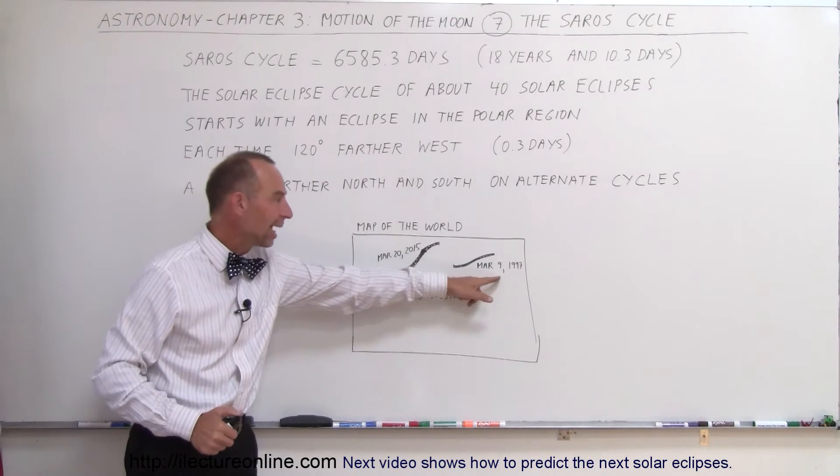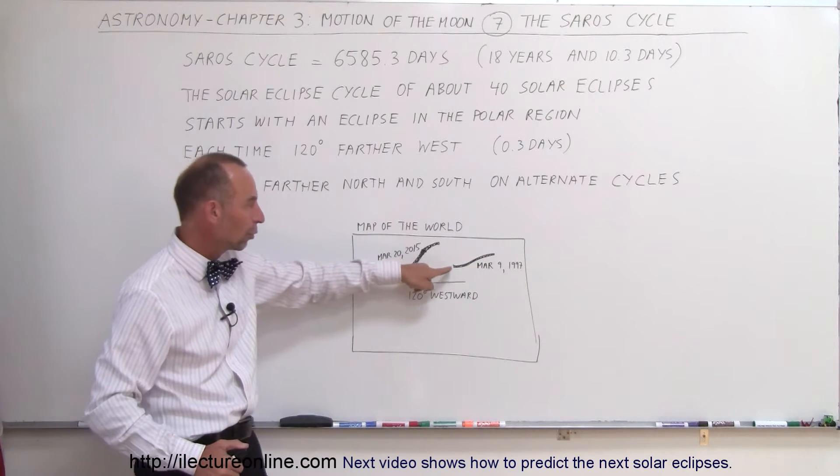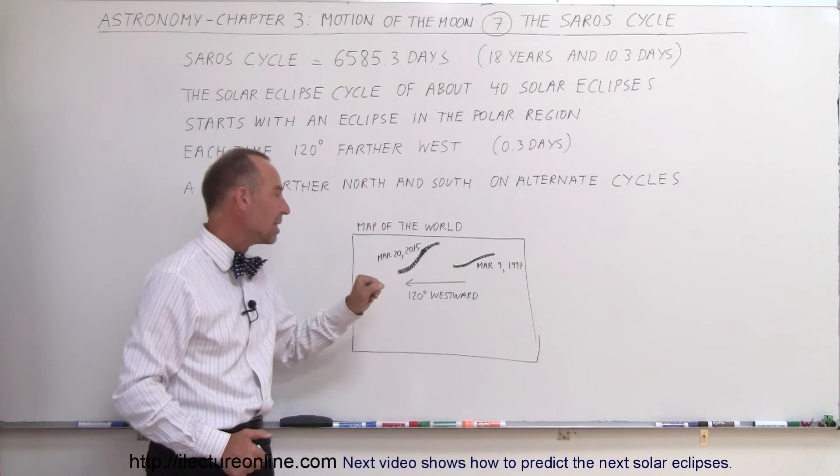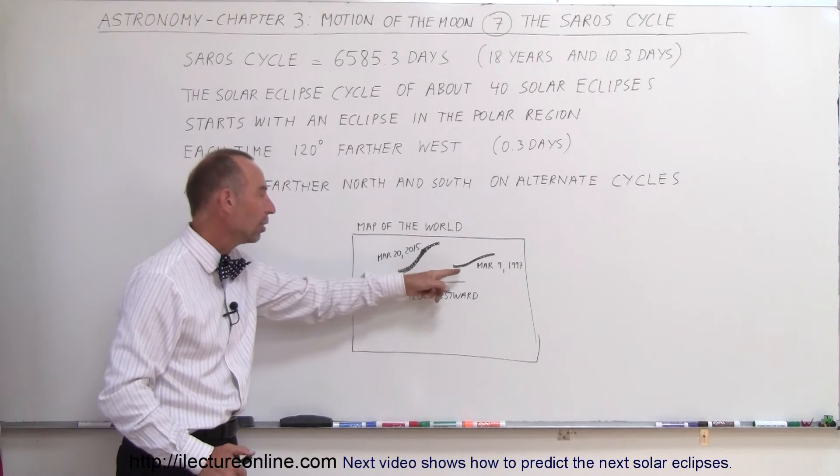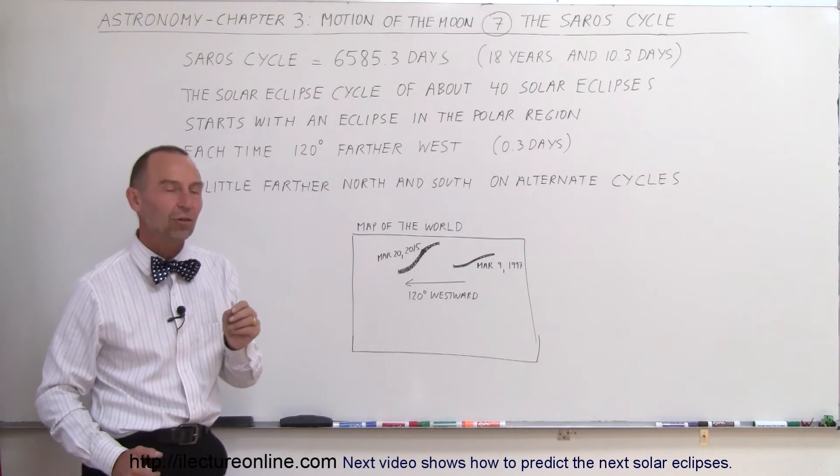So on March 9th, 1997, we had a total solar eclipse in the polar region, and 18 years, 10.3 days later, we'll have another one in the polar region, but about 120 degrees shifted to the west.